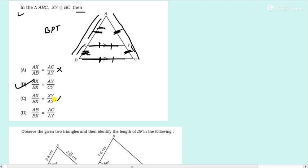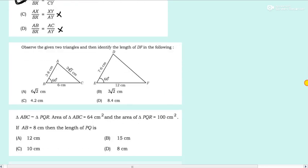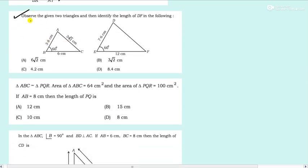Next question: observe the two given triangles ABC and DEF and identify the length DF. Angle 60 is common. Side 6 and 12 — one is double the other. Side 3.8 and its counterpart are also in a 1:2 ratio. So the ratio is 2 times, meaning DF equals 3 root 2 times 2 equals 6 root 2. The answer is option 6 root 2.